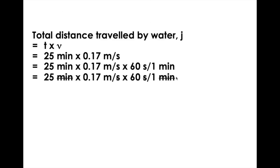Okay, minute is cancelled with minute, second over here is cancelled with second over here. So the total distance traveled by the water or j will be obtained in meter units. So if you times 25 to 0.17 and with 60, you will get the answer of the total distance traveled by water to be 255 meters.